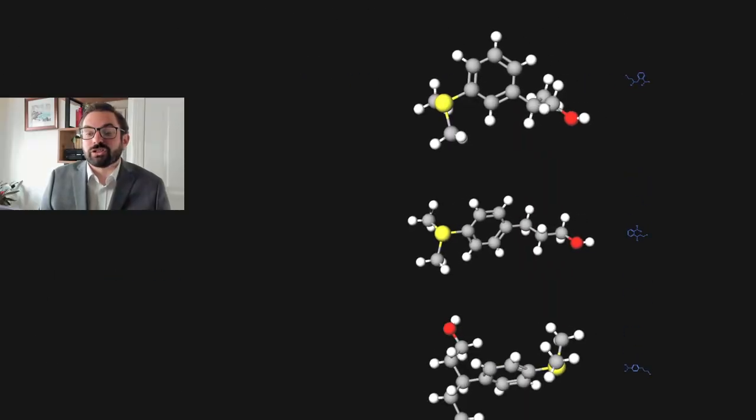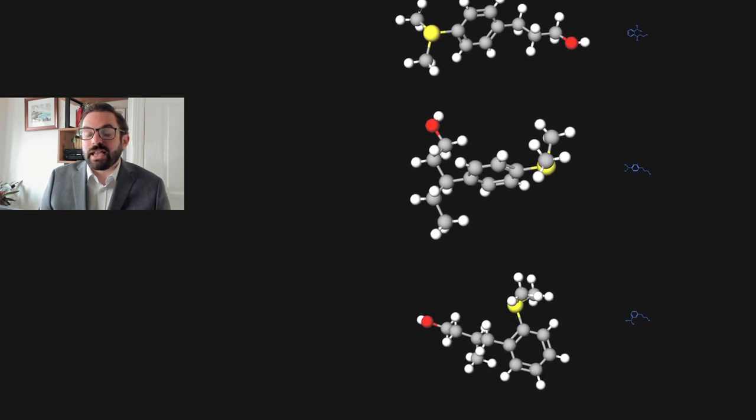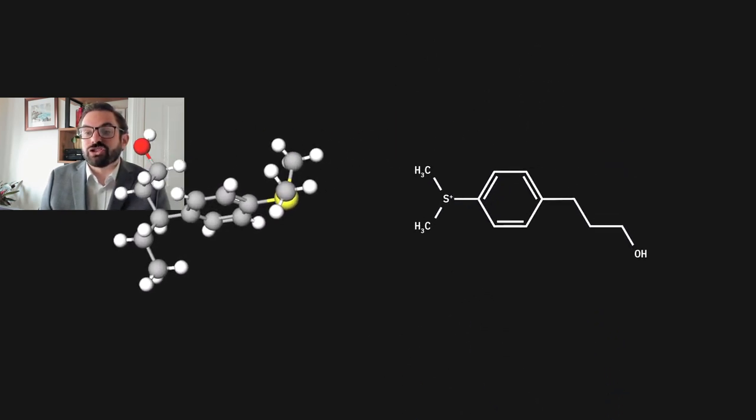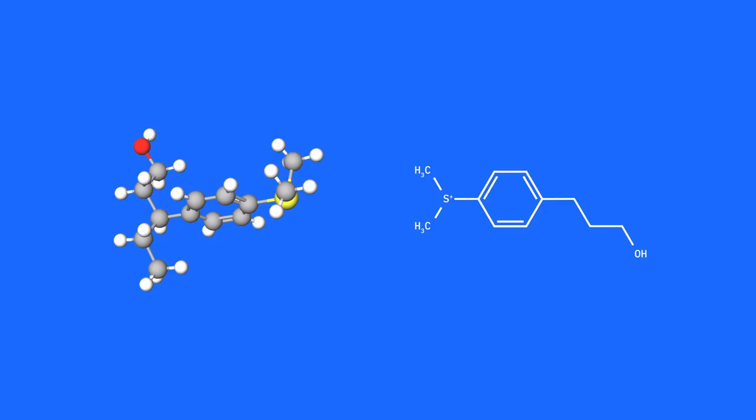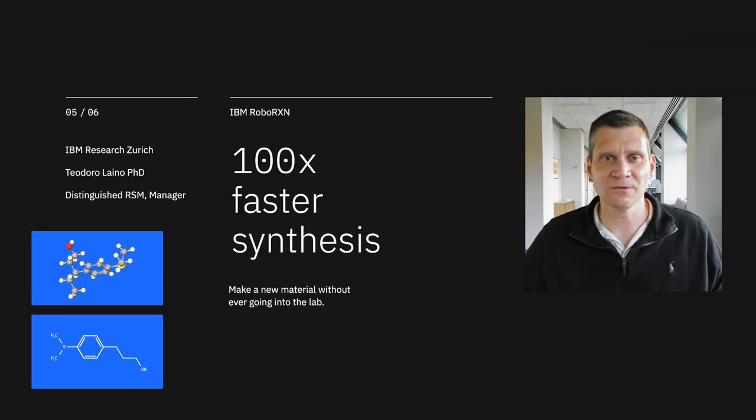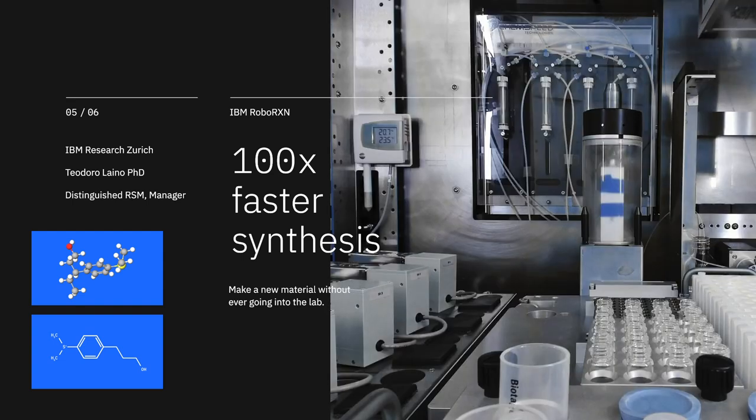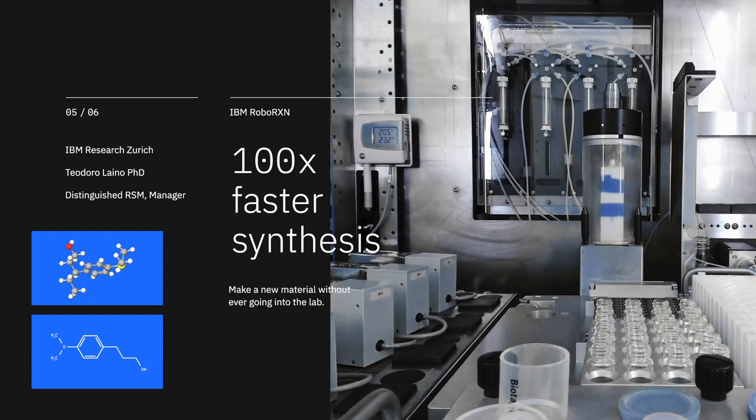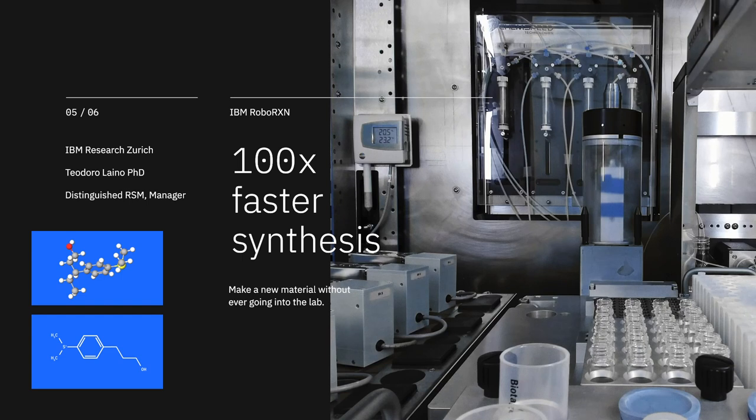We used AI-enriched simulation to understand the molecules which the generative models were producing before sending them for synthesis. With some actionable candidates as a result of the generative model, we then partnered with Teo and the IBM Zurich team who are developing autonomous labs which can automatically carry out those forward syntheses to produce the chemicals of interest.